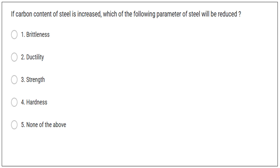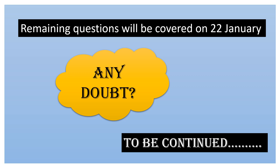Question number ten is similar: if carbon content of steel is increased, which parameter of steel is reduced? Here ductility is given as one of the options, so the second option is correct — ductility is the parameter that decreases when carbon content increases.